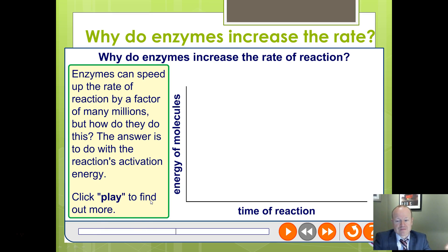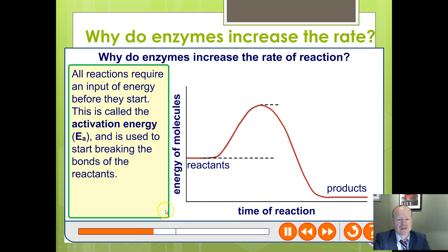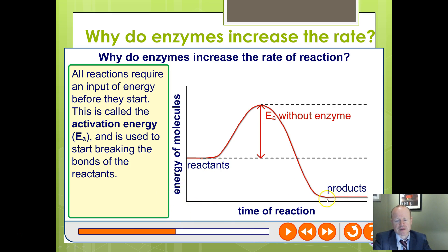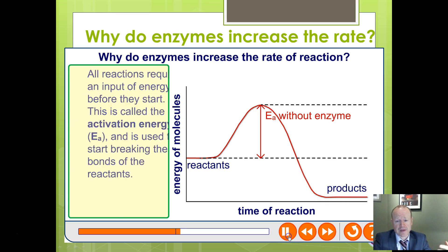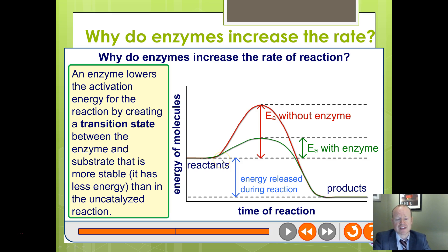Enzymes can speed up reactions millions of times. Looking at a standard reaction curve with reactants versus products, the activation energy without the enzyme is quite high — a steep hill. You have to supply quite a large amount of energy to start breaking bonds before you can start making bonds. With an enzyme, it lowers the activation energy required, making it much easier for the reaction to occur. A transition state is created; it holds the substrate more stably and therefore less energy is required overall.